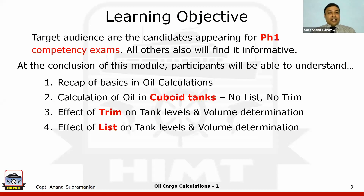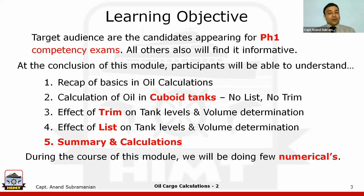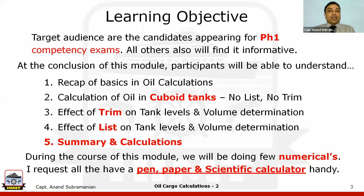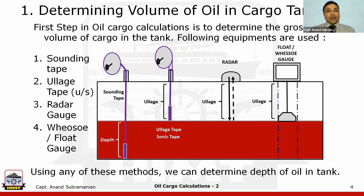We'll be looking at the effects of trim and list separately so we understand the concepts, and then finally summarize the whole thing and do a small calculation. During the module, some numerical calculations will be involved, so please keep your pen, paper, and a scientific calculator handy — you'll be doing trigonometrical ratio calculations. The main objective is to prepare candidates for the phase one competency examination.